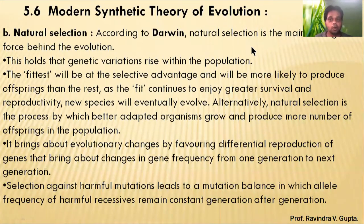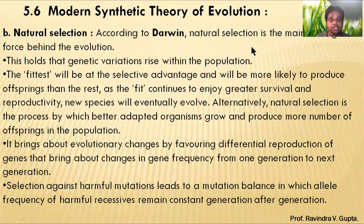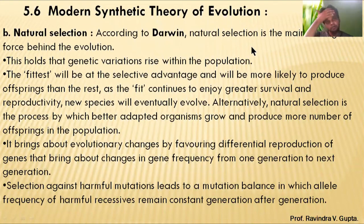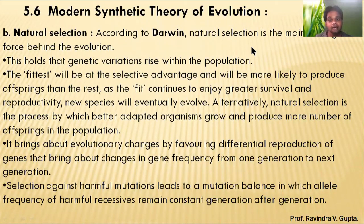Natural selection holds the genetic variation that rises within the population. Fittest means the change in the new organism — survival of the fittest. The fittest will be at a selective advantage and will be more likely to produce offspring. As the fittest continue to enjoy greater survival and reproductivity, new species will eventually evolve.